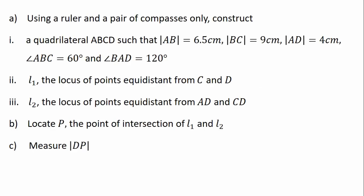Here is our question. Using a ruler and a pair of compasses only, construct a quadrilateral ABCD such that the length of side AB is 6.5 cm, the length of side BC is 9 cm, the length of side AD is 4 cm. Part i: construct L1, the locus of points equidistant from C and D.